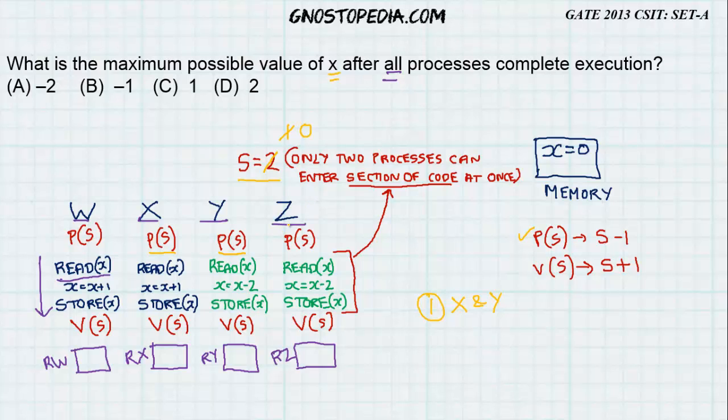Now, after this point, if any other process wants to enter, namely W or Z, they won't be able to because S cannot be decremented further and this will go into a busy wait. So, coming back, Y reads the value of x from the memory. The value of x is 0 and stores in its register. Similarly, X reads the value of x and stores in its register.